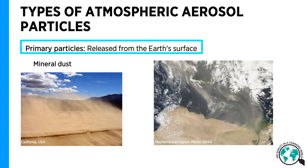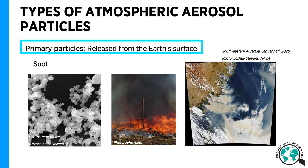Mineral or desert dust is another example of coarse-sized primary particles of natural origin. The largest global contributions come from the Sahara and East Asian and Saudi Arabian deserts. Soot from combustion processes such as car exhaust and biomass burning are also primary particles. They are classified as anthropogenic particles because in many cases biomass burning is prescribed, and when not, it is often, like in the case of the massive bushfires in Australia, a result of anthropogenic climate change. The particles are fine in size and the largest sources are from South America, Africa, India, Australia, and Southeast China.